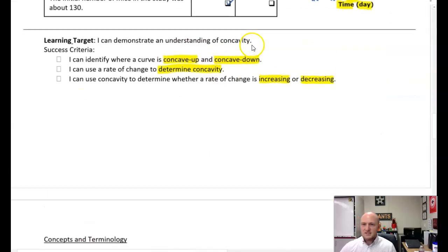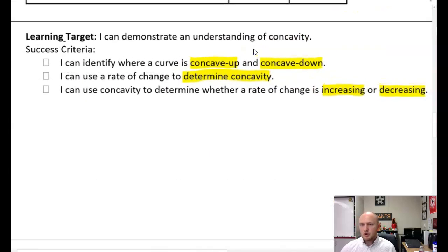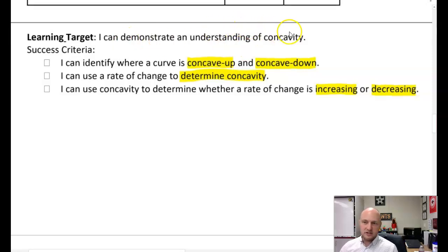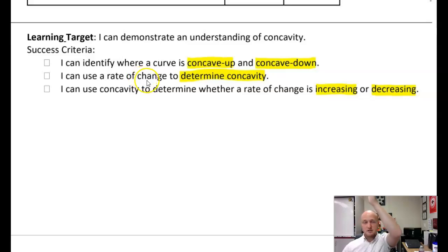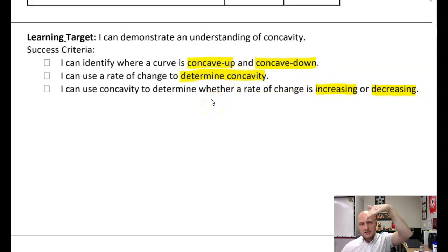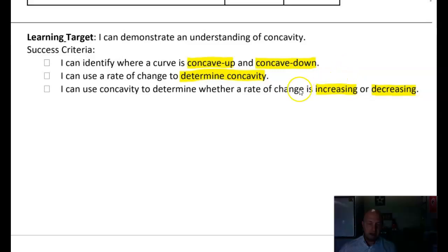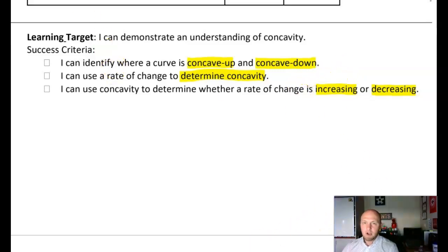So hopefully in this lesson, you were able to demonstrate an understanding of concavity — that you can identify on a curve where it's concave up and concave down, and tie this into rate of change. It's concave up if the rate of change is increasing, the slopes are getting bigger and bigger. And it's concave down if those slopes are getting more and more negative. I'll catch you in the next video.